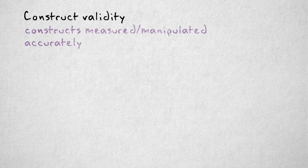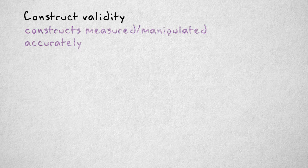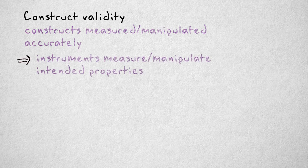Construct validity is an important prerequisite for internal and external validity. A study has high construct validity if the properties or constructs that appear in the hypothesis are measured and manipulated accurately. In other words, our methods have high construct validity if they actually measure and manipulate the properties that we intended them to.